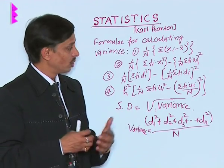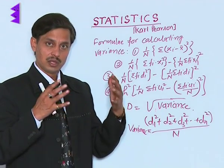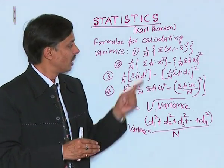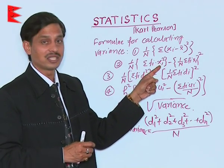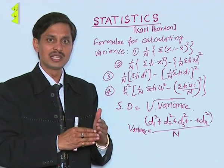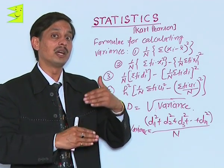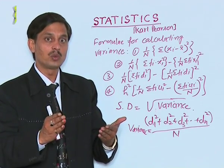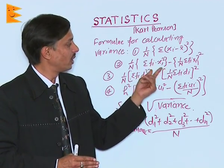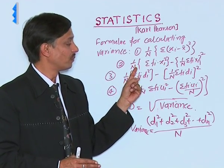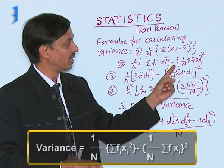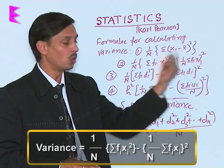To calculate variance when frequencies fᵢ are given, use fᵢ × xᵢ². When observations and frequencies are given, calculate the square of xᵢ. When xᵢ² is multiplied by fᵢ, the formula is: Σ(fᵢxᵢ²)/Σfᵢ - (x̄)².